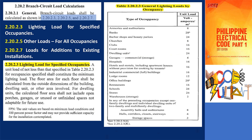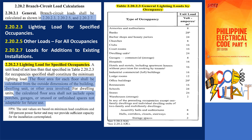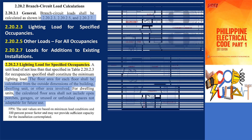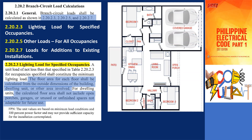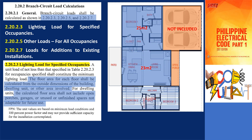To determine the area, it will be from the outside dimensions of the building. For dwelling units, areas such as open porches, garages, or unused or unfinished spaces not adaptable for future use shall not be included in determining the total area. Our sample project has an area of 120 square meters. Since the garage and open porch are to be excluded, the total area for the lighting load will be 73 square meters.